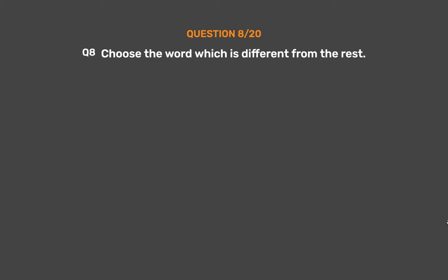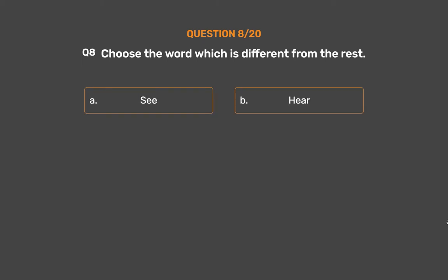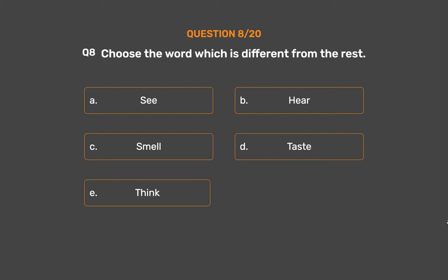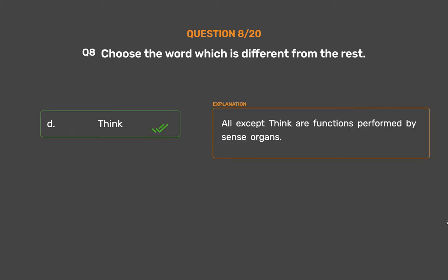Question number 8. Choose the word which is different from the rest. Option D: Taste. Option E: Think. The correct answer is Option E: Think. All except Think are functions performed by sense organs.